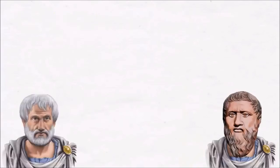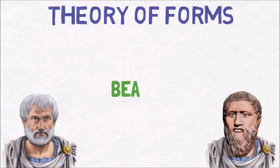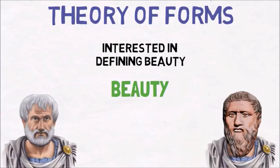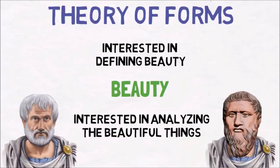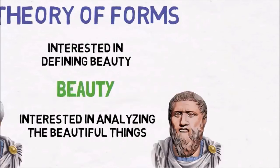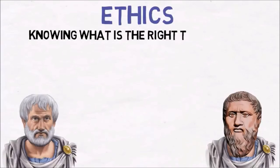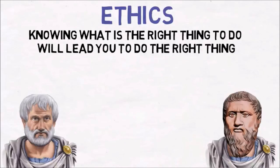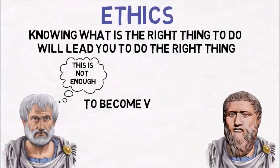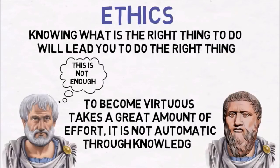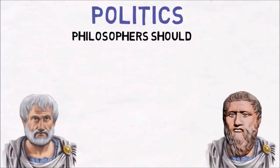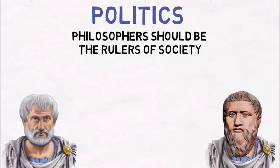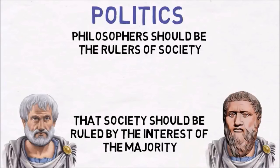Regarding the theory of forms, for example, in the case of the concept of beautiful, Plato would be interested in defining beauty, while Aristotle would be more interested in analyzing the beautiful things that exist in this world. With regards to ethics, Plato believed that knowing what is the right thing to do will lead you to do the right thing, while Aristotle believed this is not enough. To become virtuous takes a great amount of effort. It is not automatic through knowledge. And with regards to politics, Plato believed that philosophers should be the rulers of society, while Aristotle defined human beings as political animals, and polity is the best way to organize a society, meaning that society should be ruled by the interest of the majority.